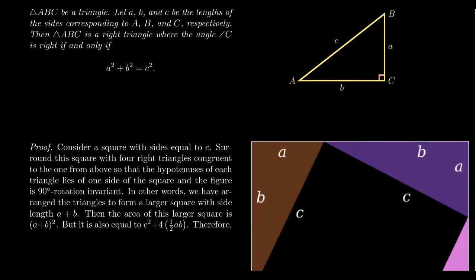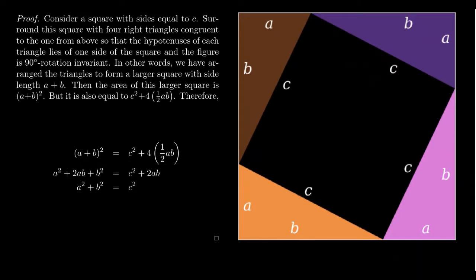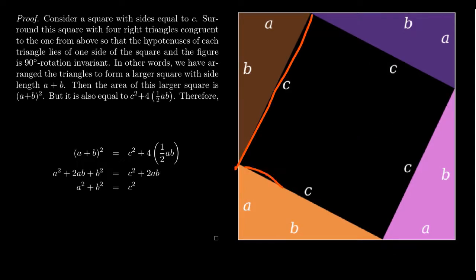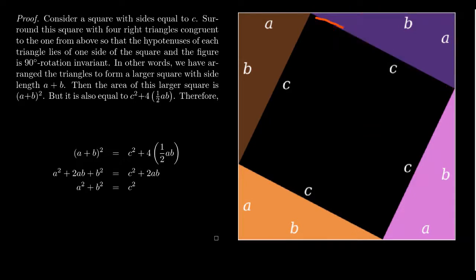Let's see why the Pythagorean theorem holds in general. This is going to be a proof by illustration. Imagine we have a square — you can see it here in black — where each side of the square has length C. We're going to draw right triangles around the square so that the hypotenuse of each right triangle coincides with the side length C.